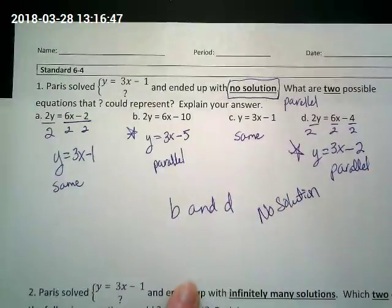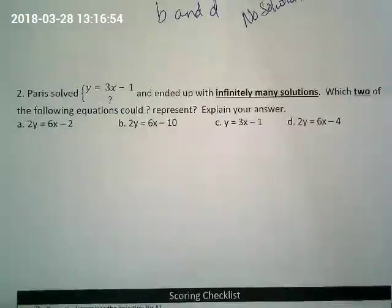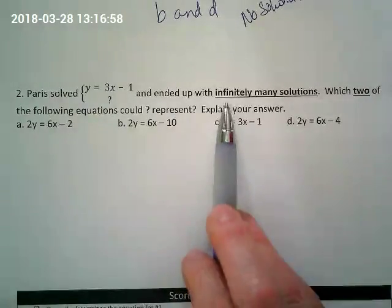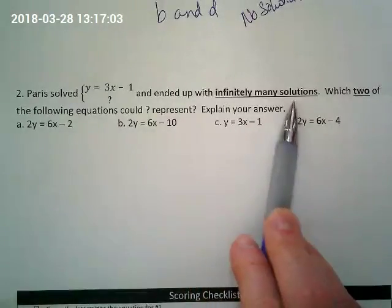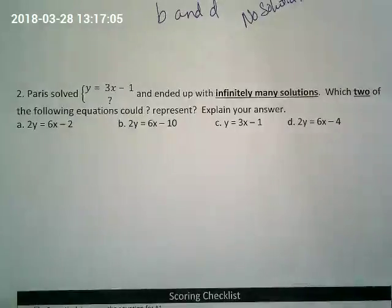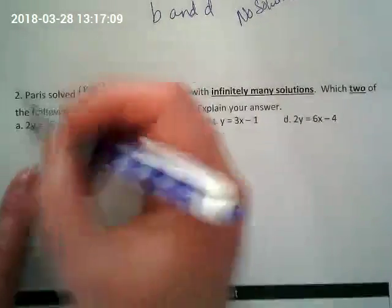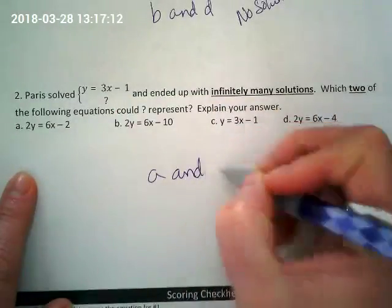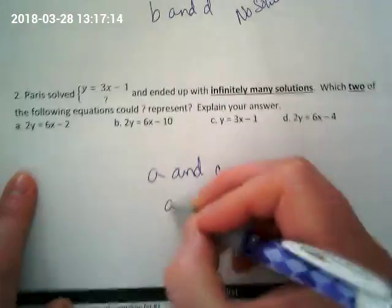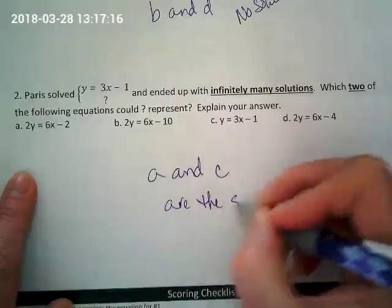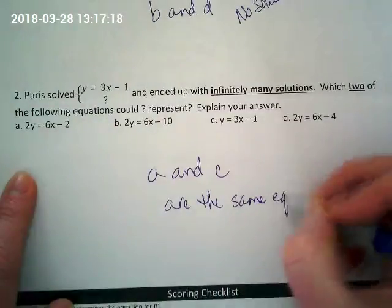Because b and d are parallel, they will never intersect — that means no solution. That made number two pretty easy, because they're the same equations. Number two asks for infinitely many solutions, so I need equations that are the exact same as the original. From above, a and c are the same equation — that means infinite solutions.